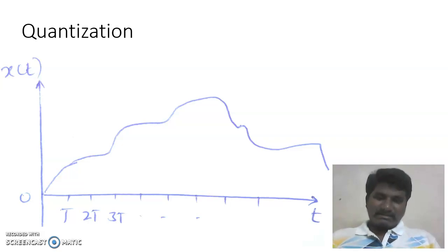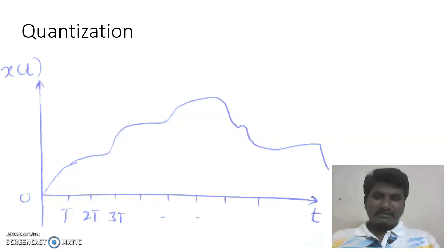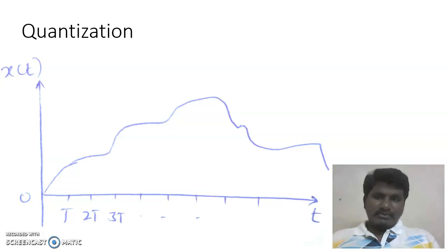Before we take up quantization, let's understand a continuous-time signal. A continuous-time signal has a continuous range of amplitude values and is present for all values of time t. Usually, to convert a continuous-time signal into a digital signal, first we perform the operation of sampling.